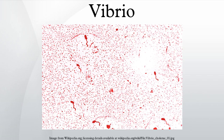Vibrio is a genus of gram-negative bacteria possessing a curved rod shape, several species of which can cause foodborne infection, usually associated with eating undercooked seafood. Typically found in salt water, Vibrio species are facultative anaerobes that test positive for oxidase and do not form spores.